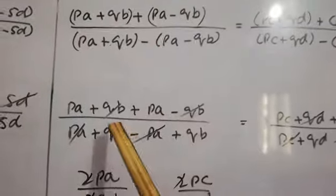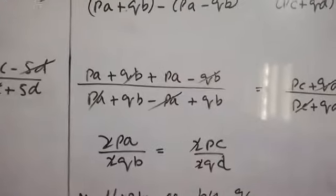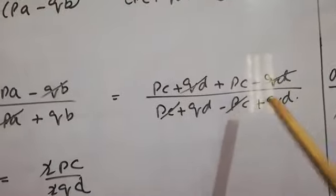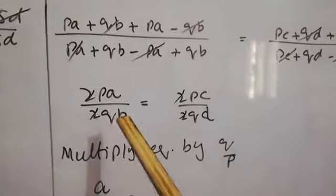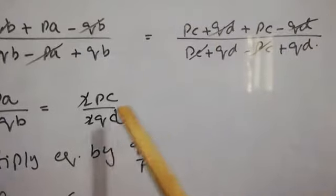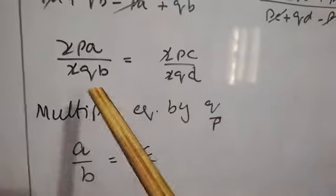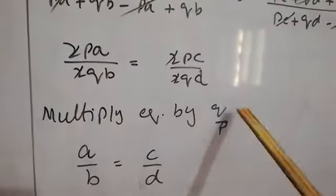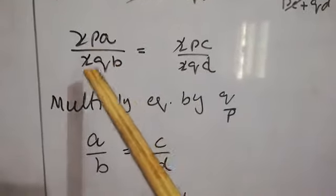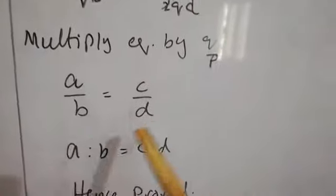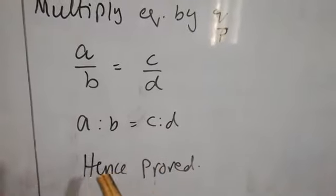After removing brackets: QB minus QB cancels, PA minus PA cancels, QD minus QD cancels, and PC minus PC cancels. We get 2PA by 2QB equals 2PC by 2QD. Multiplying the equation by Q by P to remove P by Q, they cancel with each other and we get A by B equals C by D. Writing this in ratio form: A ratio B equals C ratio D. Hence proved.